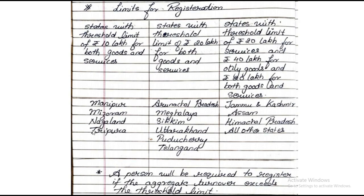Keep in mind the mnemonic MMNT — Manipur, Mizoram, Nagaland, and Tripura. Category two: if the supply is from the states of Arunachal Pradesh, Meghalaya, Sikkim, Uttarakhand, Puducherry, and Telangana, then the threshold limit is rupees 20 lakhs for both goods and services.